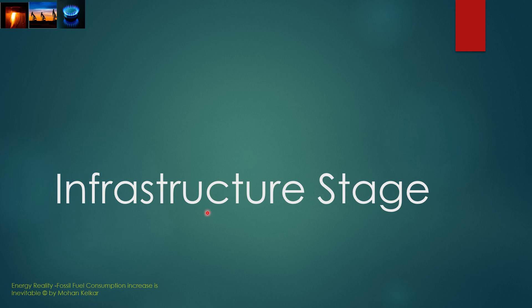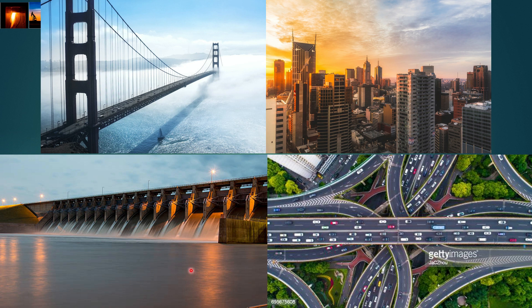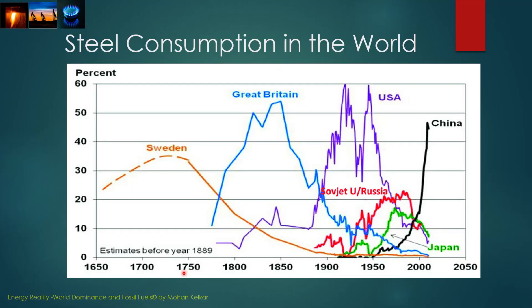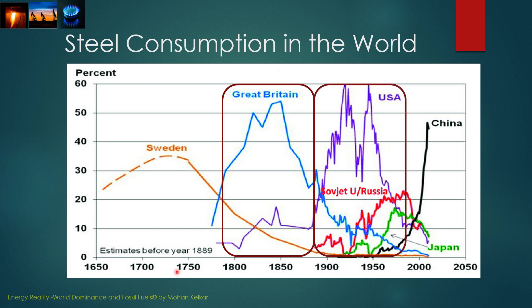Why the difference? It is because you have to build the infrastructure before fossil fuels can be used efficiently. Infrastructure means building bridges, buildings, dams, roads, buying cars, and also improving farming yield by using fertilizer, which is also produced from natural gas. If you look at steel consumption in the world, you can clearly see how this infrastructure period has changed. Between 1780 and 1900, it was Great Britain which consumed most of the steel. Then between 1900 and 1965, it was the United States. And in the last 20 years, it is China which is consuming most of the steel because of infrastructure building.